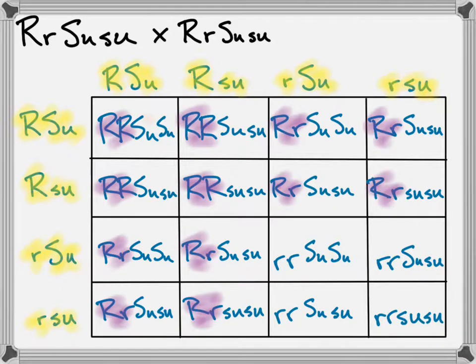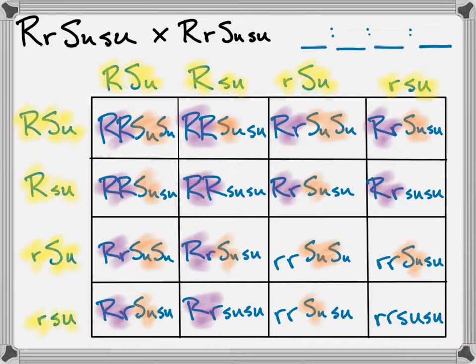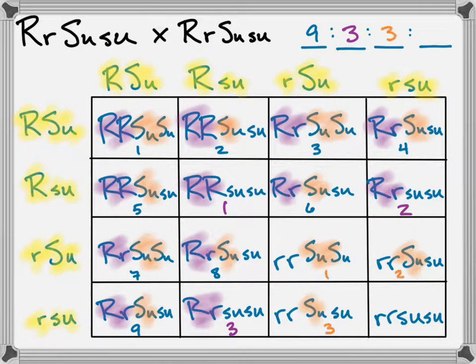I can look at which ones have the dominant R — I'm using a color-coded highlighter here — and then dominant SU, so you can kind of see a pattern emerging. Now we want to relate that pattern to our ratios. First I'm going to count everything that's dominant for both traits — that's nine. Then everything that's just the dominant R, just the dominant SU, and recessive for everything. And there is our nine to three to three to one ratio.